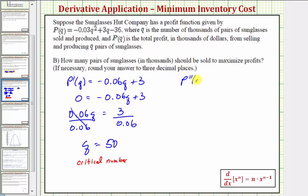So P double prime of Q would be equal to the derivative of the first derivative. So the derivative of negative 0.06Q with respect to Q would just be negative 0.06. The derivative of three is zero. So notice how here this tells us the second derivative is always negative. So our function is always concave down. Or if we want, P double prime of 50 would still be equal to negative 0.06, which means our function is concave down at the critical number 50.